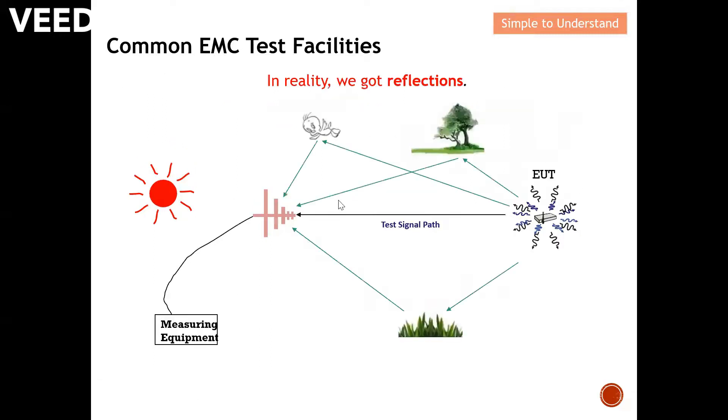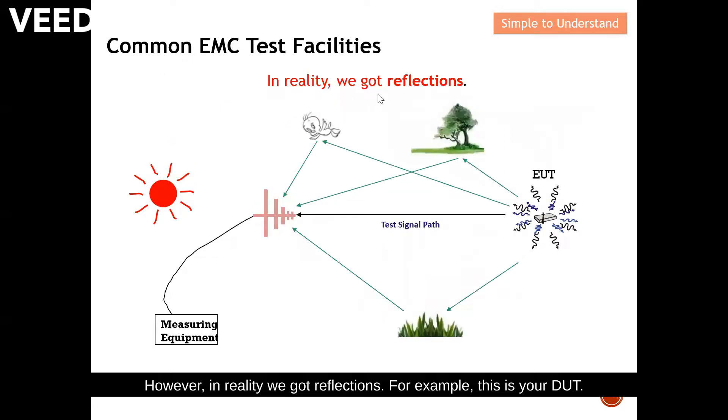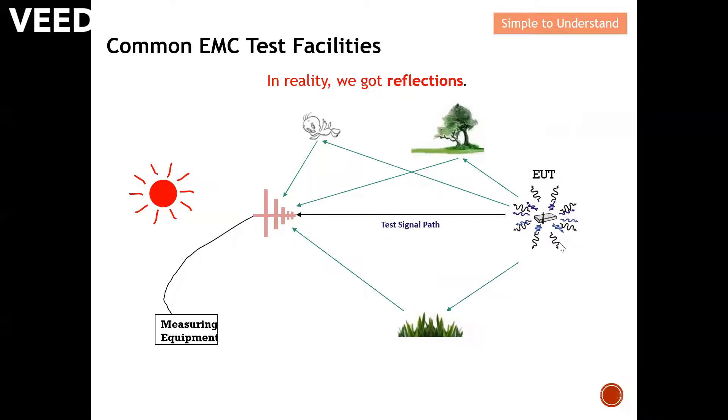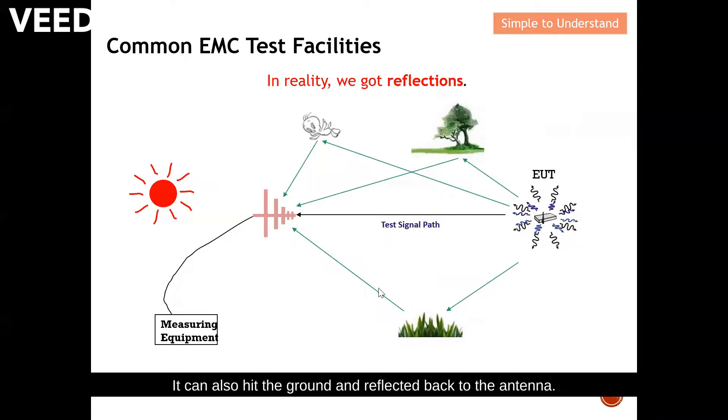However, in reality, we got reflections. For example, this is your DUT. It may reflect off the tree and come back to the measuring antenna. It can also hit the ground and refract back to the antenna, or even any living thing that is living nearby. It may be refracted back and actually reach the antenna.